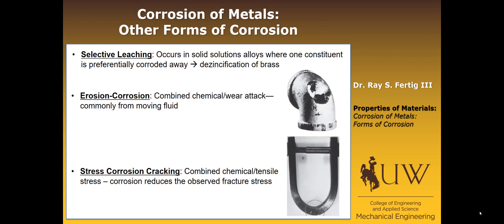There are some other forms of corrosion that I at least want you to know the definition of. One is called selective leaching — it occurs in solid solutions where one constituent is preferentially corroded away. For example, brass is made of copper and zinc. De-zincification of brass — the removal of zinc from the brass solid solution — is an example of selective leaching.